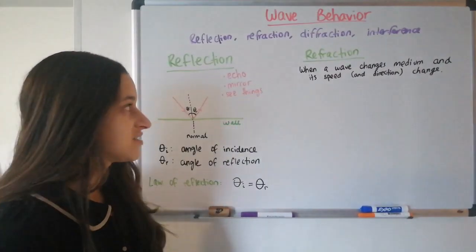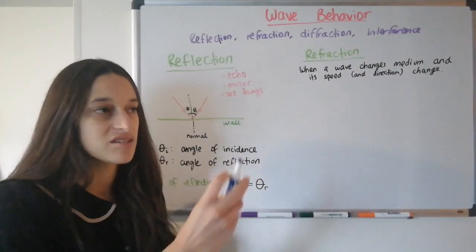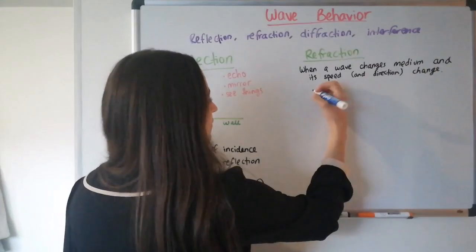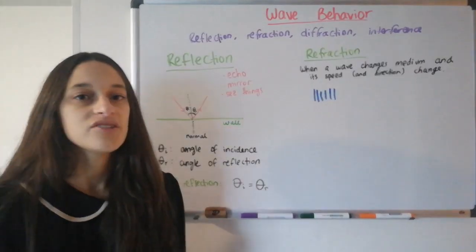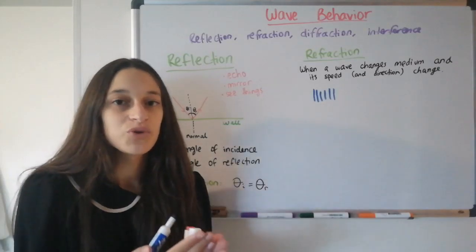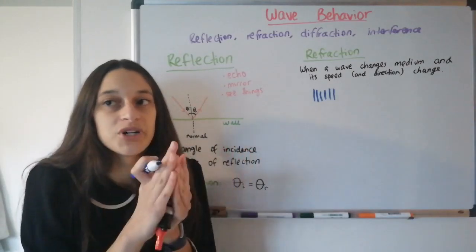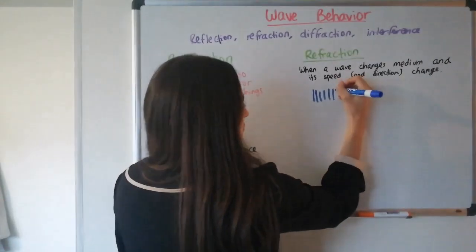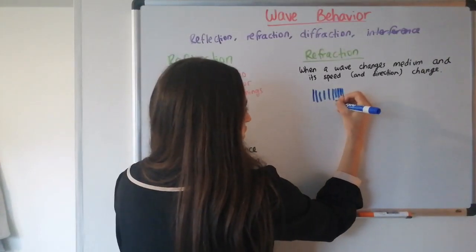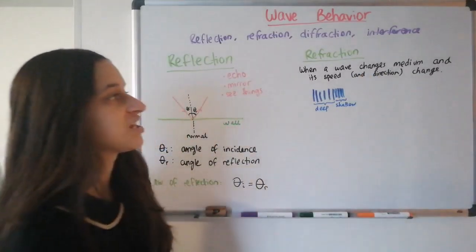One example is with water waves. Suppose you have water waves — I'm going to draw them as straight lines, representing the crests of each wave as seen from the top. Let's say the waves are in the ocean and they're coming to a shallower part. The waves are going to go slower, so they start bunching up together. If they were spread apart in the deep part, they become compressed in the shallow part. So this is considered a change in medium: shallow versus deep.